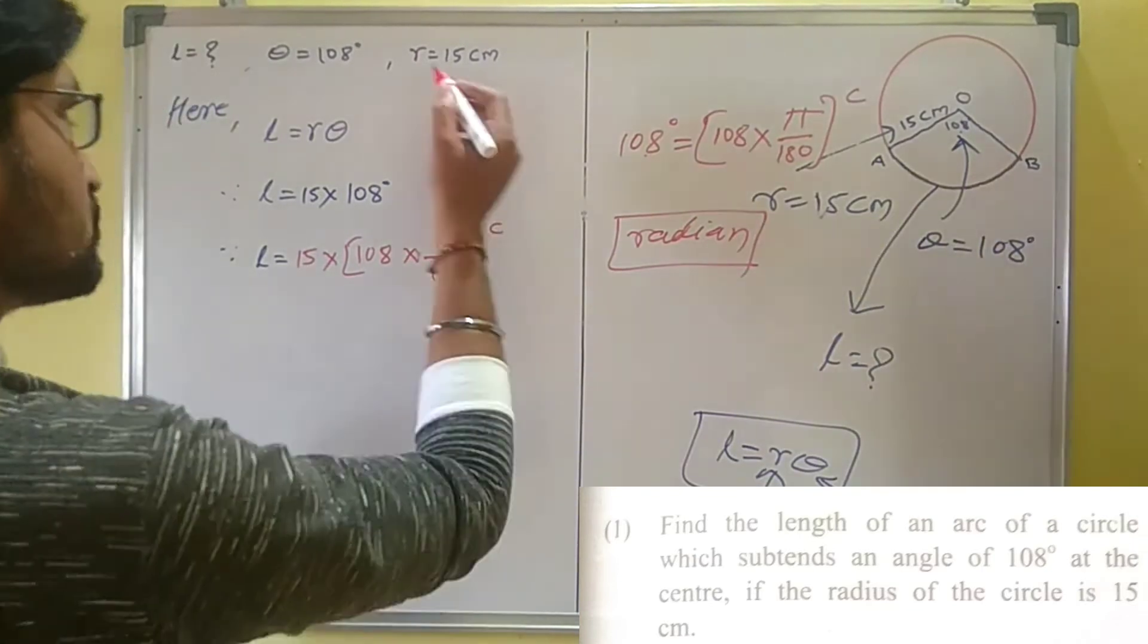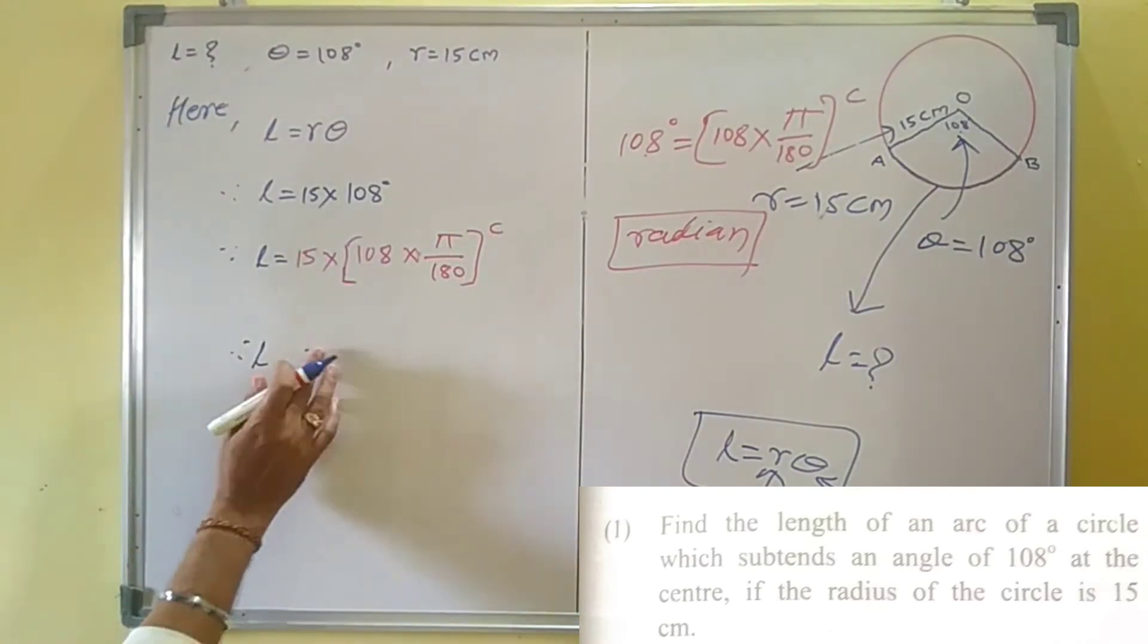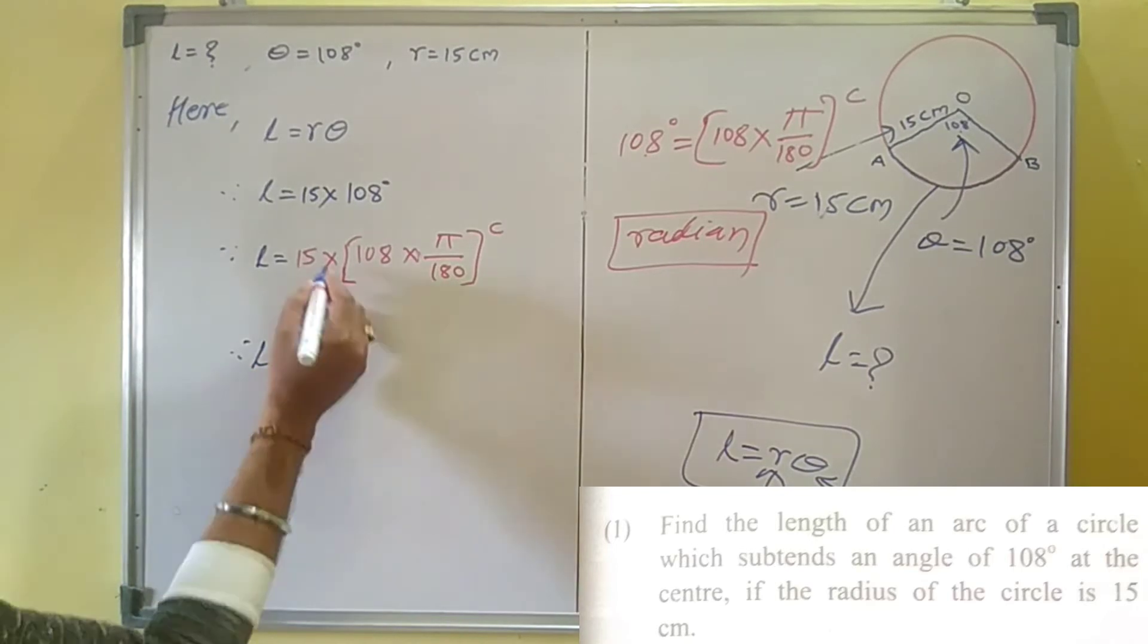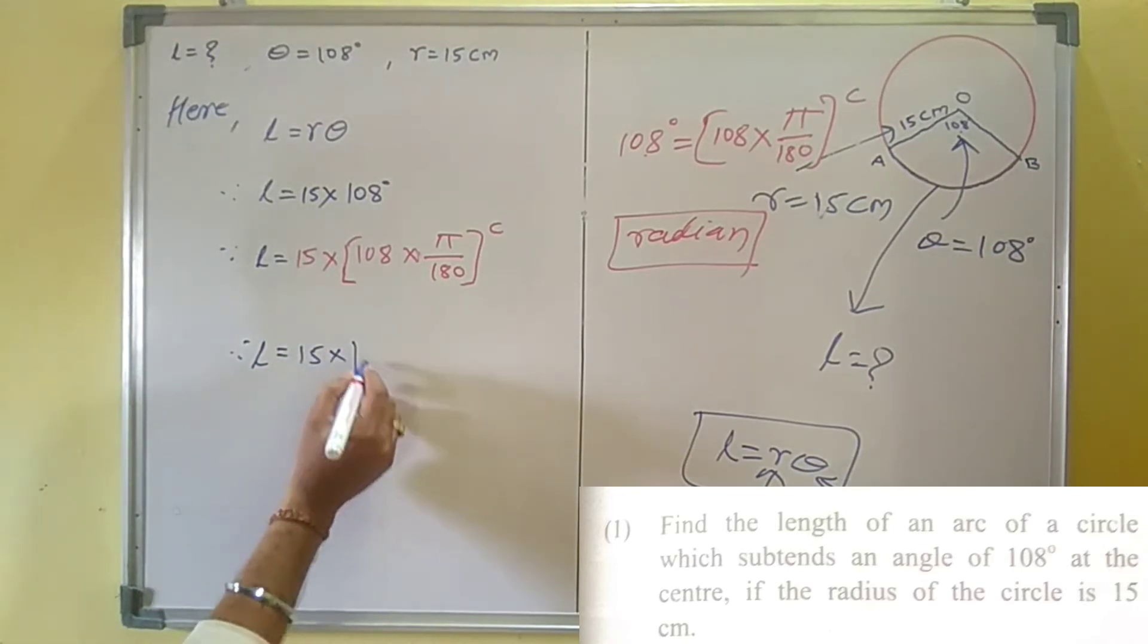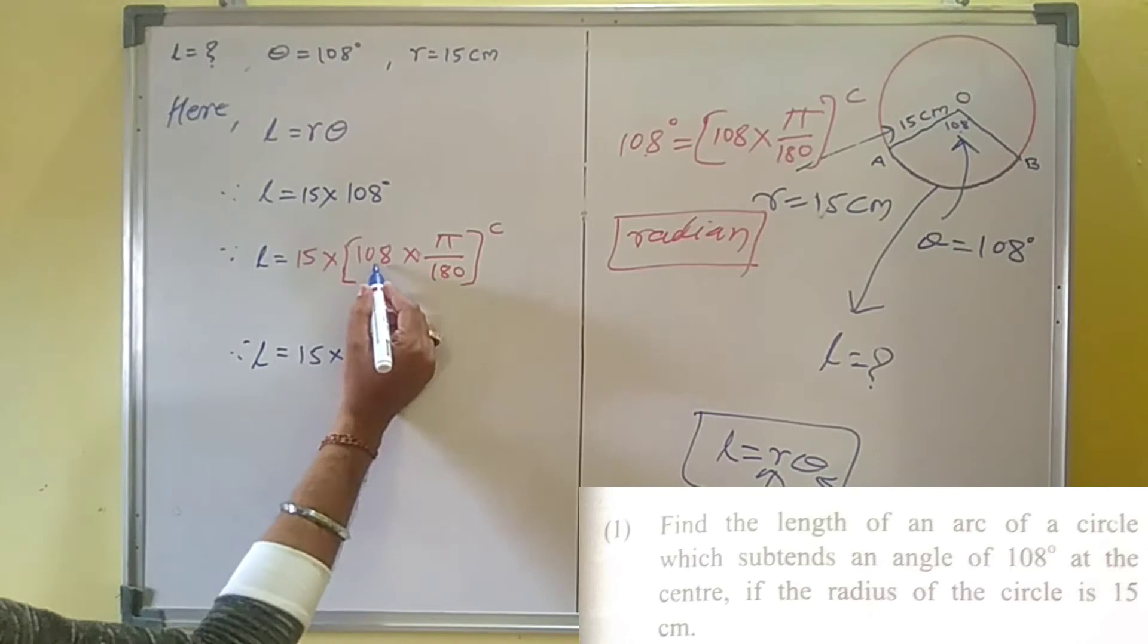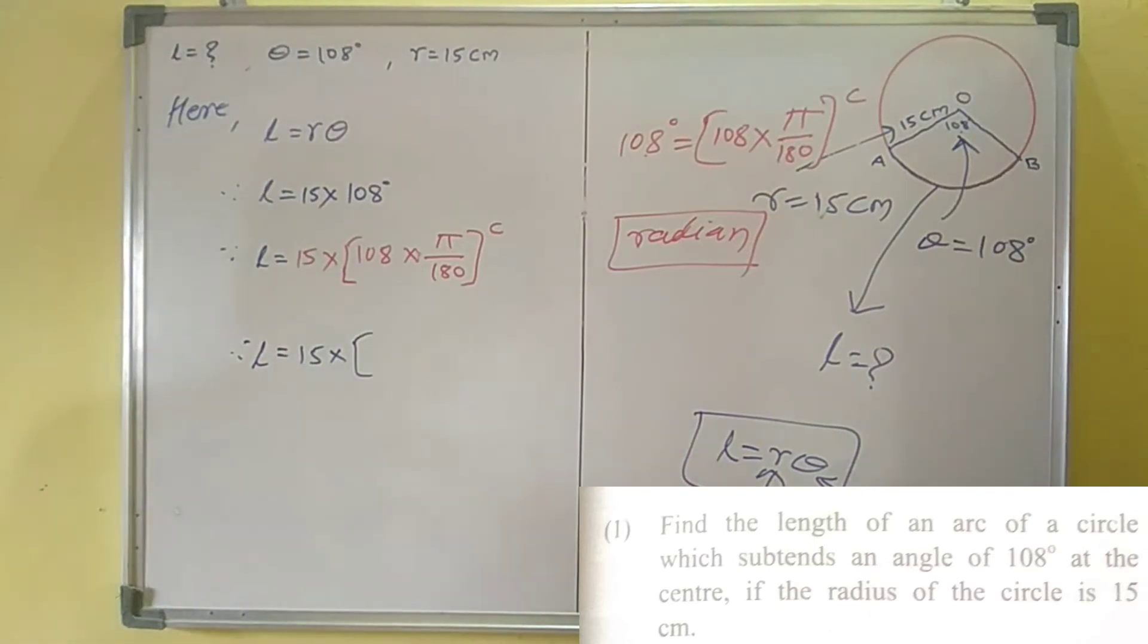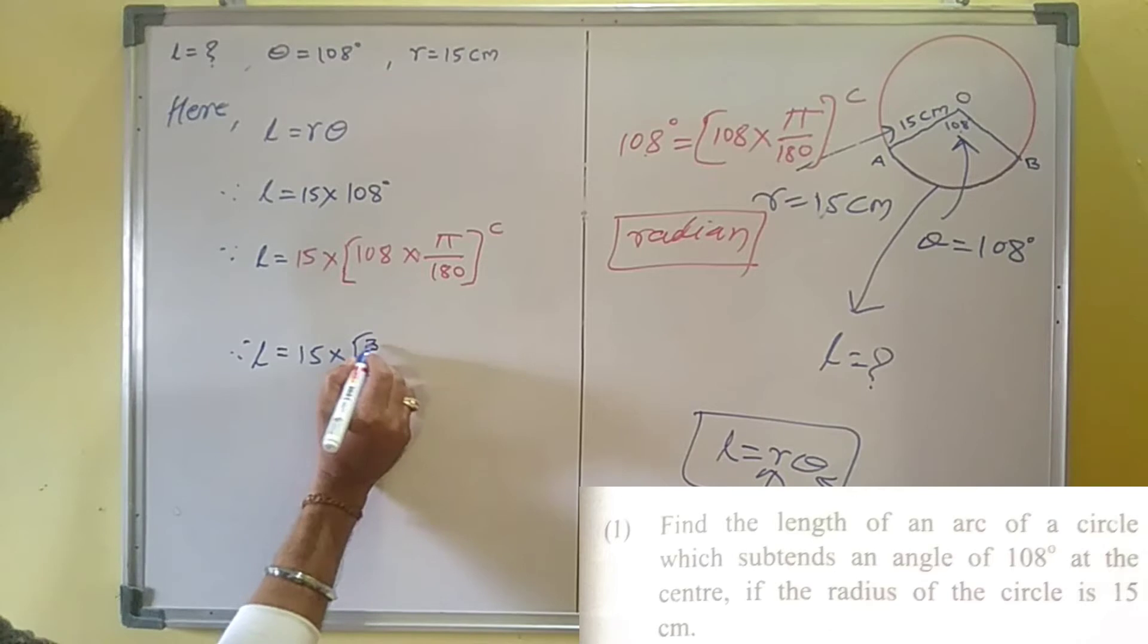What happens next? L is equal to 15 as it is, then sign of multiplication. Now in bracket, factor is 108 and factor is 180, so we write here 3 into 36. 3 into 36 is equal to 108, into pi by now factors of 180, that is 5 into 36.